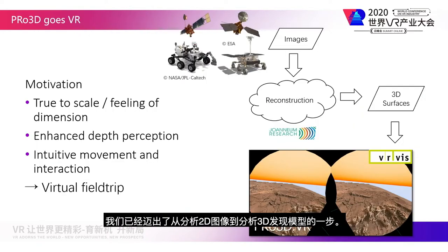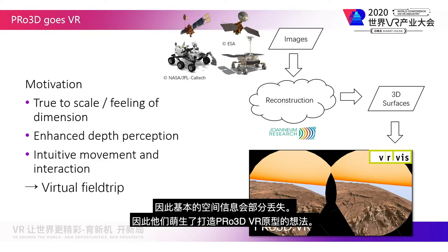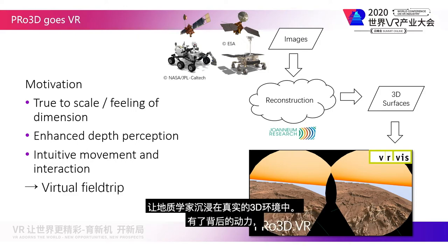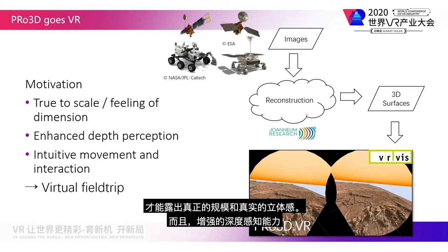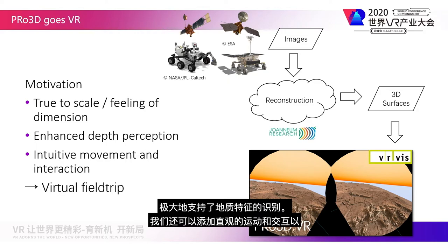We already made the step from analyzing 2D images to analyzing 3D outcrop models. But these 3D outcrop models are still projected onto a 2D screen, so the essential spatial information is partly lost. Therefore, we had the idea to build a Pro3D VR prototype, immersing the geologist in a true 3D environment, with the motivation to have an outcrop true to scale and a true feeling of dimension. The enhanced depth perception greatly supports the identification of geological features.